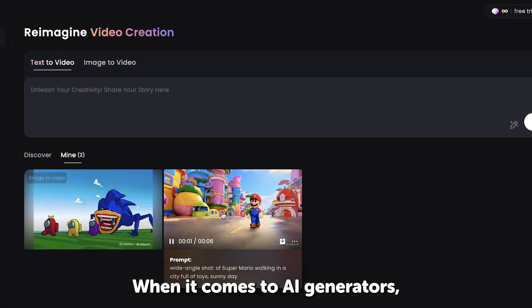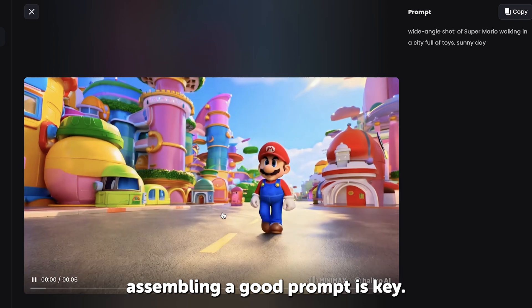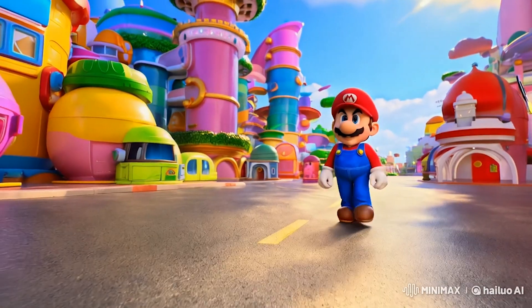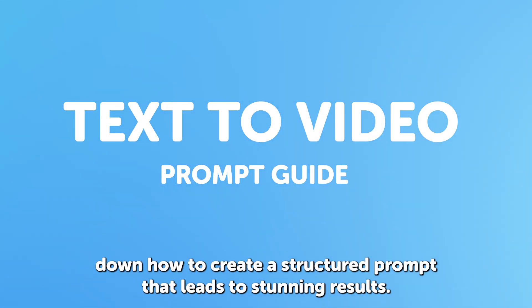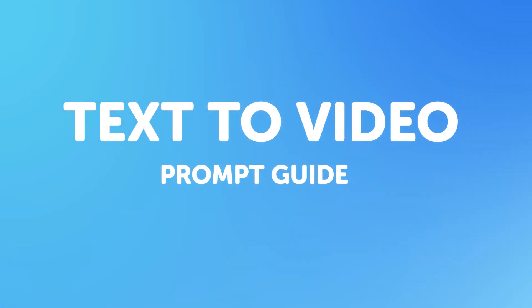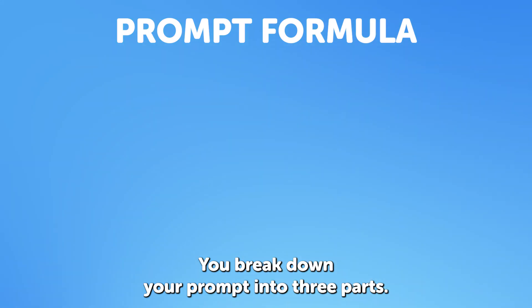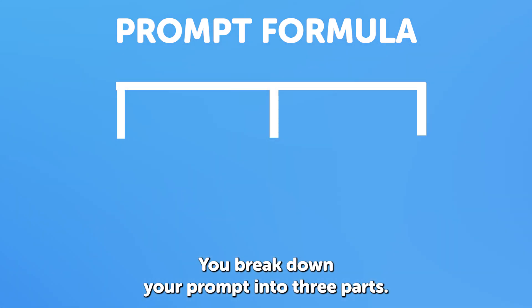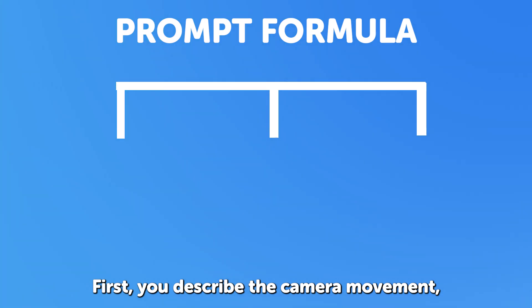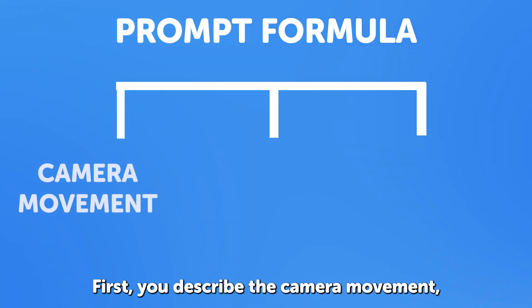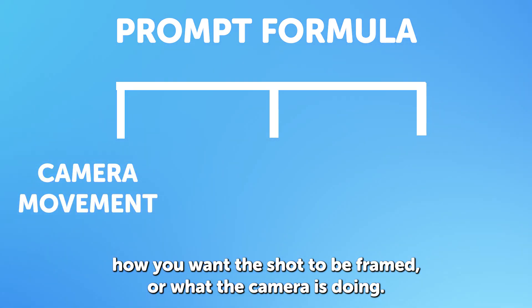When it comes to AI generators, assembling a good prompt is key. Let's break down how to create a structured prompt that leads to stunning results. Here's a simple format that works really well in crafting a good prompt. You break down your prompt into three parts. First, you describe the camera movement, how you want the shot to be framed, or what the camera is doing.